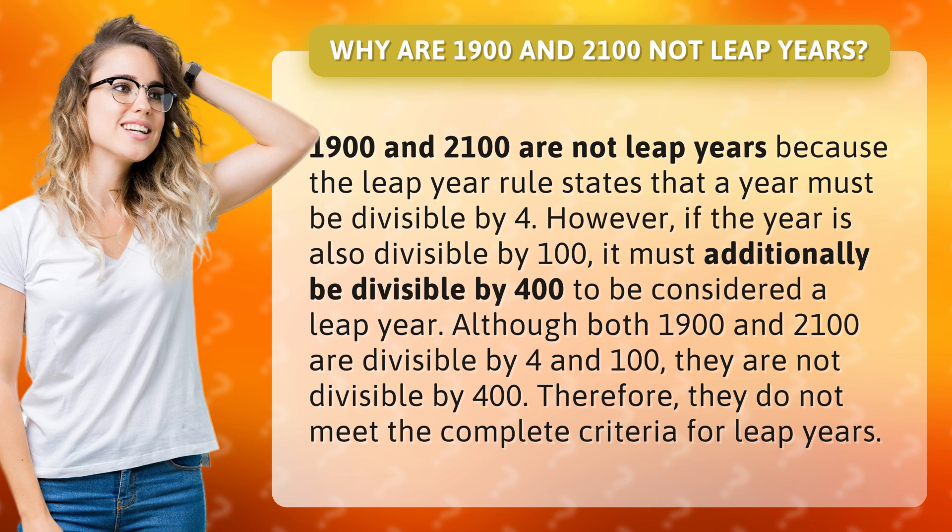Although both 1900 and 2100 are divisible by 4 and 100, they are not divisible by 400. Therefore, they do not meet the complete criteria for leap years.